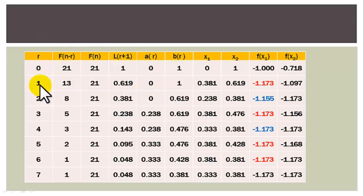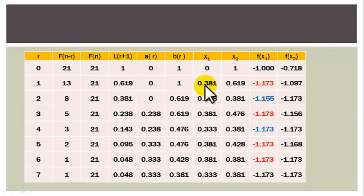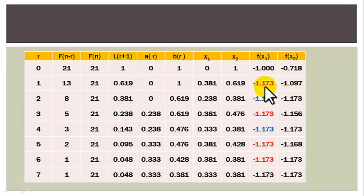When R equals to 1, we have 8 minus 1 which is 7, so this is F7 — recall F7 is 13, F8 is still 21. Then L2 is 0.619. A1 is 0, B1 is 1. X1 gives 0.381 while X2 gives 0.619. The value of the function at X1 is minus 1.173 and at X2 the value is minus 1.097. Since minus 1.173 is less than minus 1.097, our next interval of uncertainty is from A to X2, that is A is 0 and X2 is 0.619. We set R equals to 2 and continue this way.